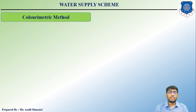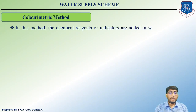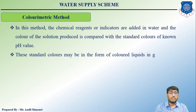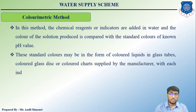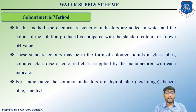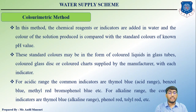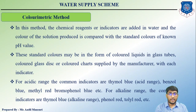In the colorimetric method, chemical reagents or indicators are added to water and the color of the resulting solution is compared with the standard color of known pH value. These standard colors may be in the form of colored liquid in glass tubes, colored glass disks, or colored charts supplied by the manufacturer with each indicator. For the acidic range, common indicators include thymol blue (acidic range), bromophenol blue, methyl red, and benzoyl blue. For the alkaline range, common indicators are thymol blue (alkaline range), phenol red, and tolyl red.